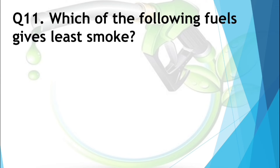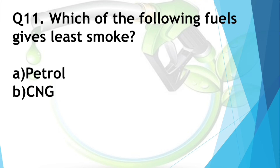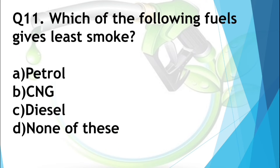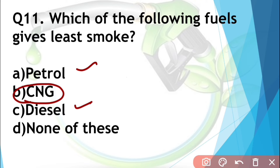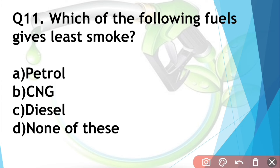Question number eleven: Which of the following fuels gives the least smoke? Options are petrol, CNG, diesel, or none of the above. Petrol and diesel cause pollution, but CNG gives the least smoke. Nowadays many buses, autos, cars, and other vehicles use CNG due to this property. So CNG is the answer.